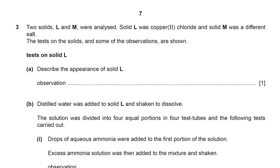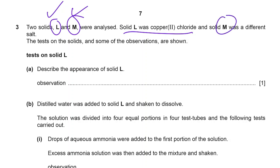Question three. You have two solids, L and M. Always in this exam, one of these compounds should be known and the other could be unknown. Here solid L is a compound which is copper(II) chloride, and solid M was a different salt — meaning M is unknown. The tests on the solids and some of the observations are shown, so we will start with compound L.